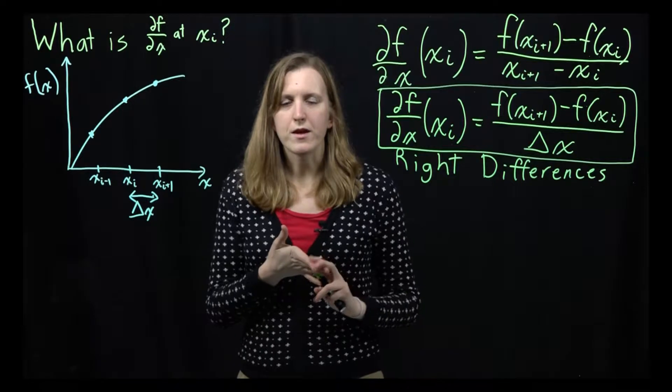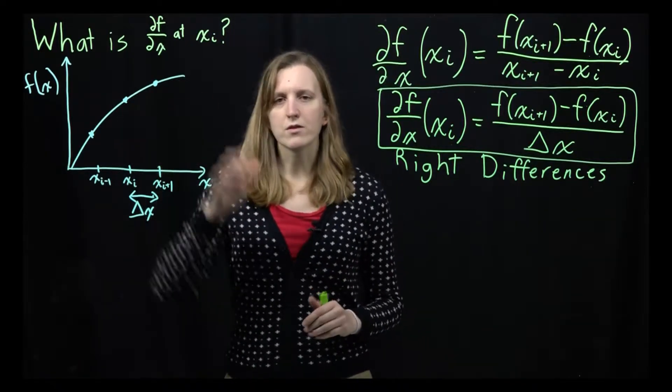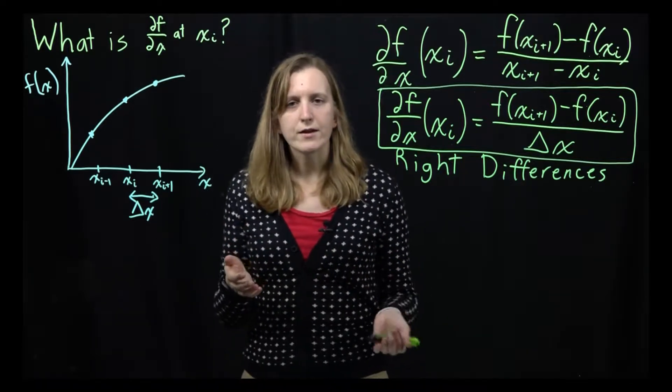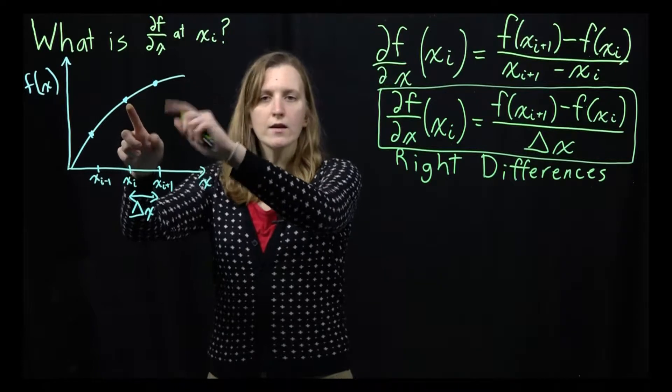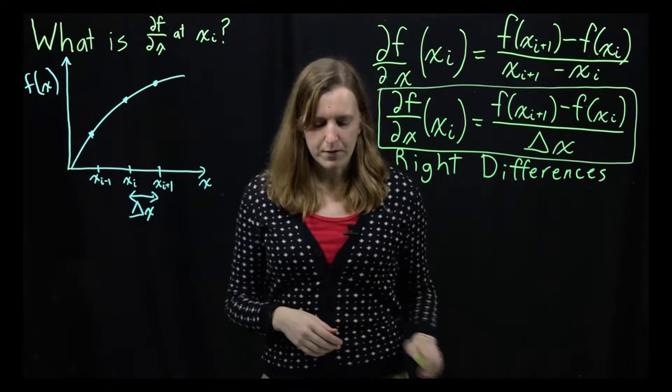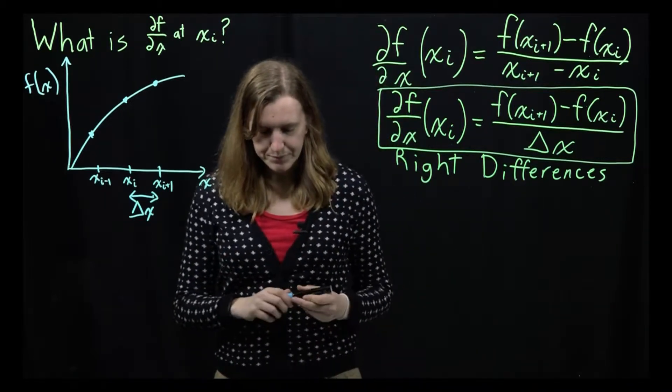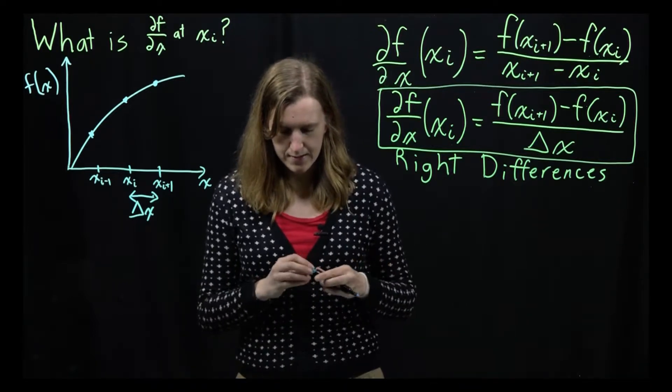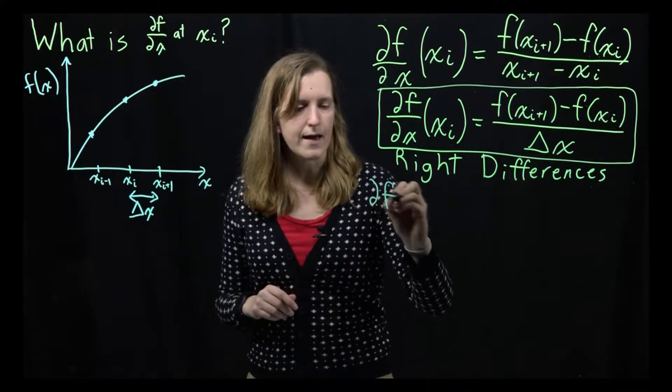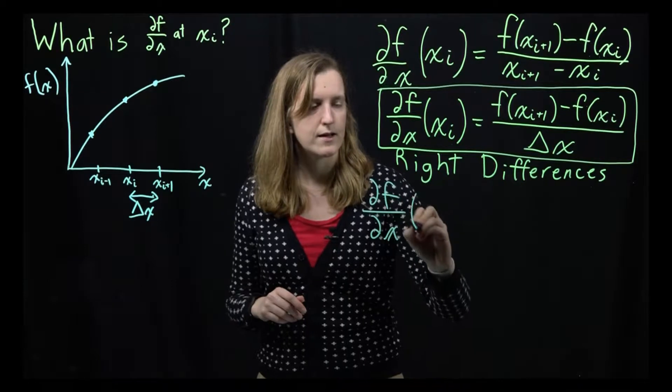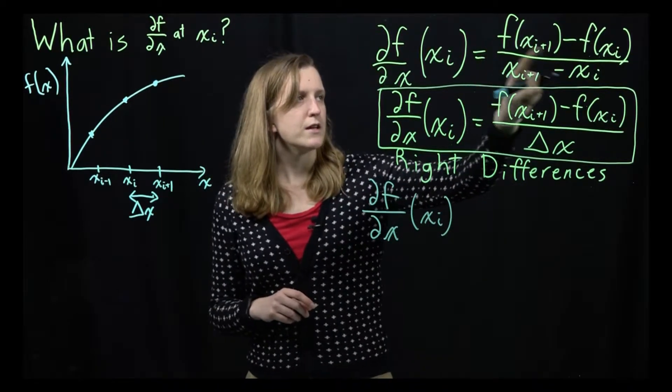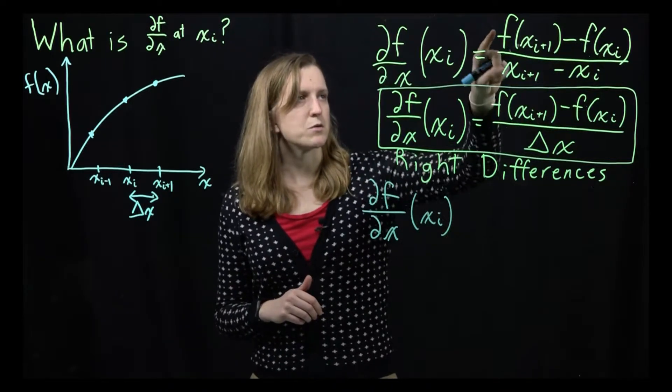But then there's also a third method that we can use, which is rather than just using one of those points, why don't we use both of them? We're going to be able to get a more accurate estimate, if I don't just know where it's going, but where was it before. So if we can use both of those points, we can use those to figure out what our, to give us a different estimate value. And so for that, what it is, so in this case then we'll get df/dx. So it's still going to be at the same point. And then rather than using xi, we'll use xi minus one. So we'll rewrite this equation.